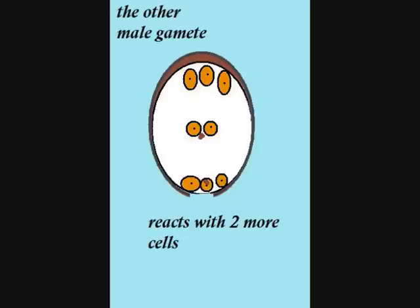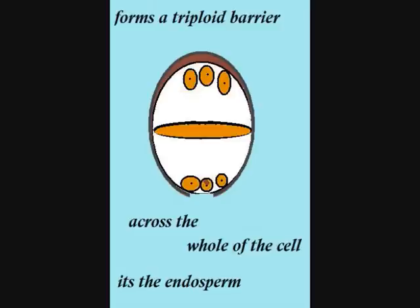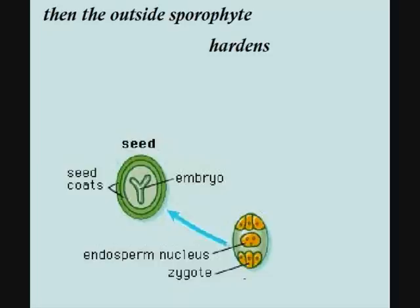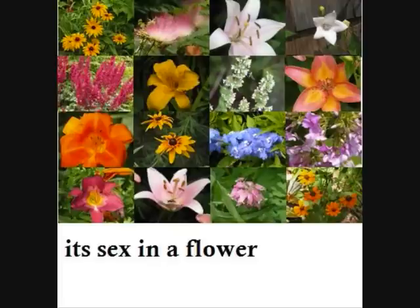It's sex in a flower. The other male gamete fuses with two more cells, forms a triploid barrier across the whole cell — it's the endosperm. Then the outside spoil coat hardens.